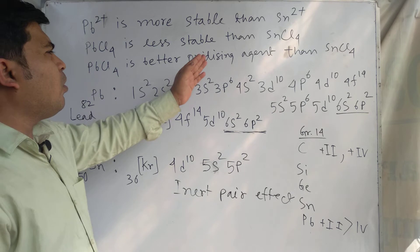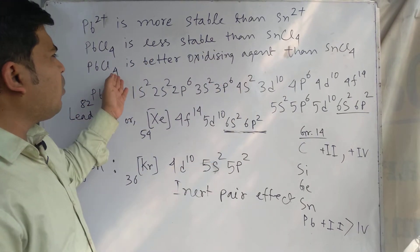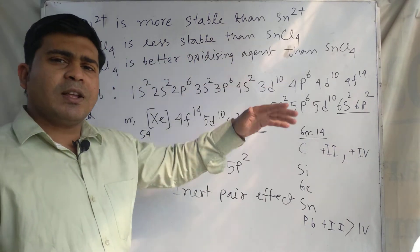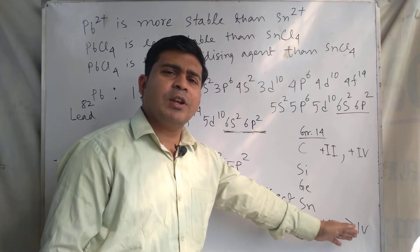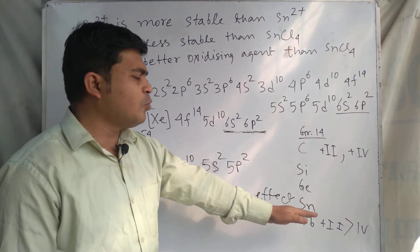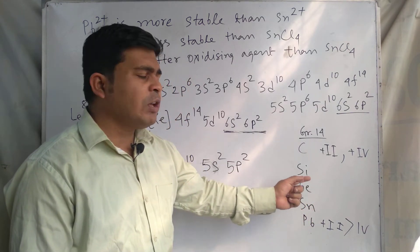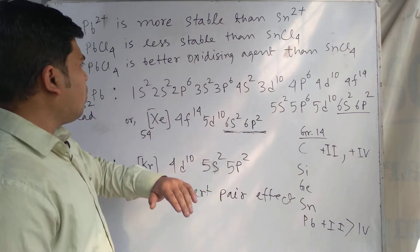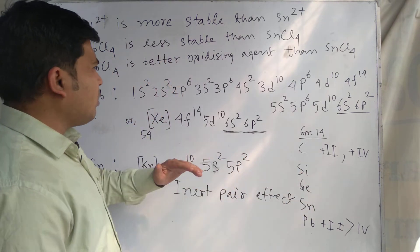PbCl₄ is a better oxidizing agent than SnCl₄. This means PbCl₄ can oxidize other chemical substances easily, while itself being reduced, because the higher oxidation state of lead is unstable. Lead has a tendency to change from a higher oxidation state to a lower one, since the lower oxidation state is more stable for lower members of the group. For this reason, lead — or PbCl₄ — is a stronger oxidizing agent than tin or SnCl₄.